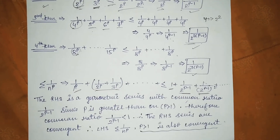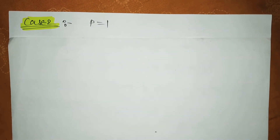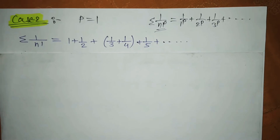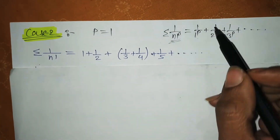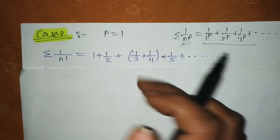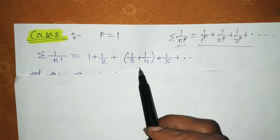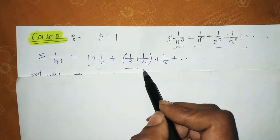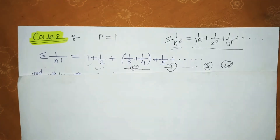Now let's move to case two. In case two, we take P equal to 1. See our series — when P is replaced by 1, the series becomes 1 + 1/2 + 1/3 + 1/4 and so on. Again, we leave the first two terms and combine the rest: two terms, then four terms, then eight terms, then sixteen terms, and so on.